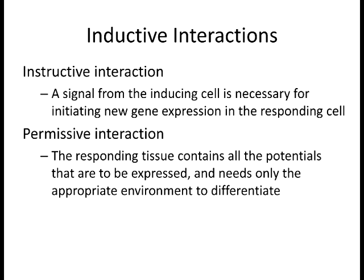Permissive interaction is where the tissue has already gone through those stages of induction and is almost ready to be finished off. It doesn't need more instruction from other tissues, but you still have to keep it in that environment—maybe there's an extracellular matrix that cells need, or they need to be in contact with other cells. They don't necessarily need an inducer; they just need the appropriate environment. Instructive is the earliest stages; permissive is the late stages where cells are almost committed.